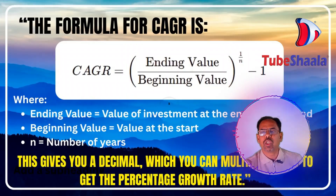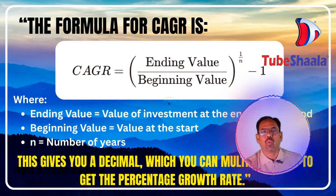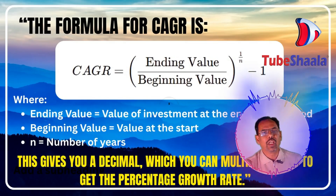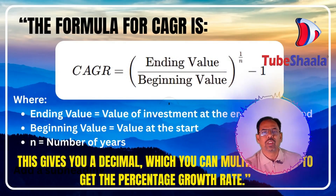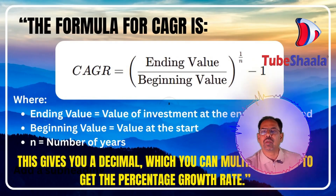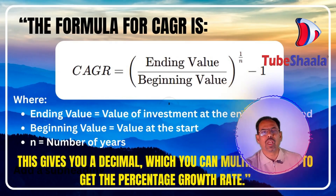CAGR = (Ending Value ÷ Beginning Value) ^ (1/n) − 1, where Ending Value is the value of the investment at the end of the period, Beginning Value is the value at the beginning, and n is the number of years. This gives you a decimal which you can multiply by 100 to get the percentage growth rate.